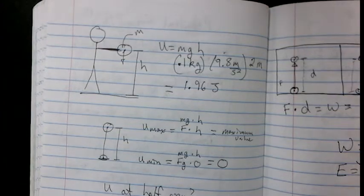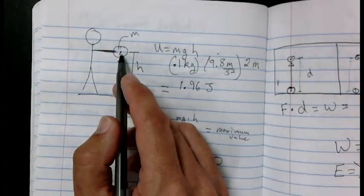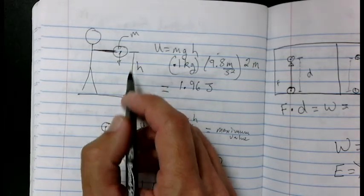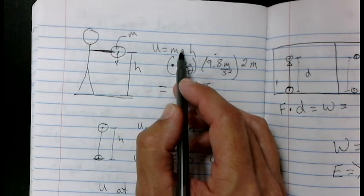So let's take a look at a diagram that might help make this make a little sense. So I've drawn my stick figure, we're holding a ball, it could be a pencil, whatever it is, it has a mass, and we lift it a height above the ground.